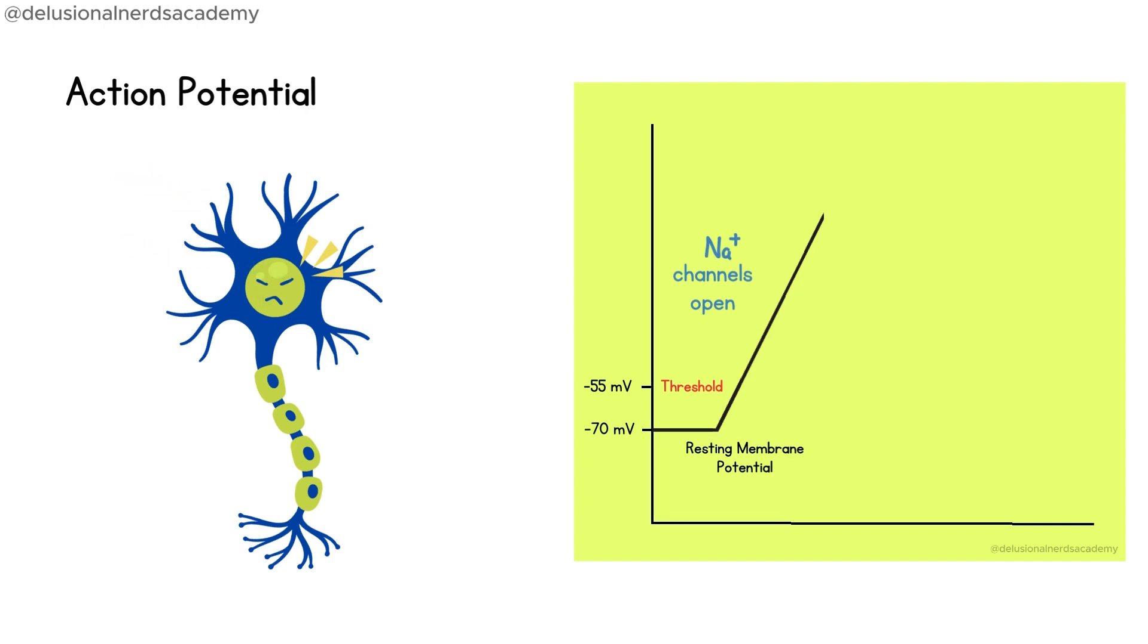The influx of sodium ions causes depolarization, where the inside of the neuron becomes more positive, rising towards positive 30 millivolts. This change in voltage travels along the neuron, sending the electrical impulse down its axon.